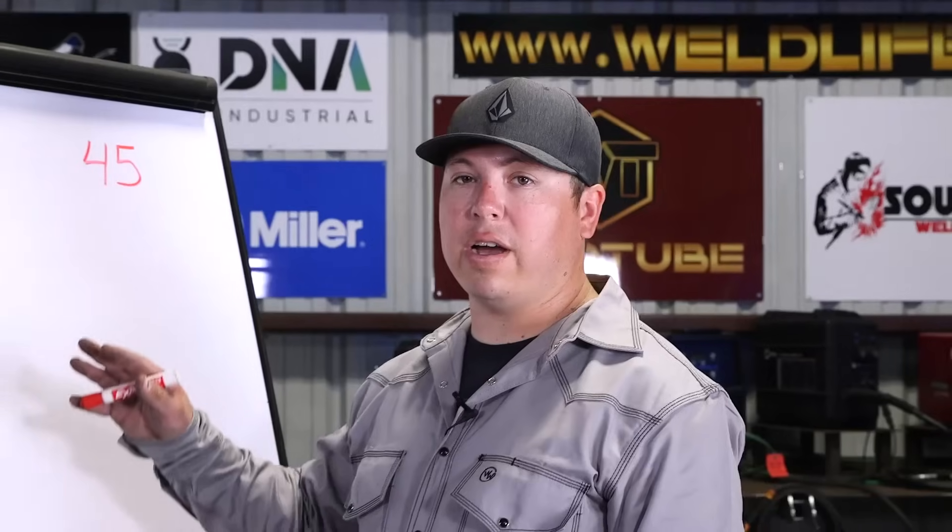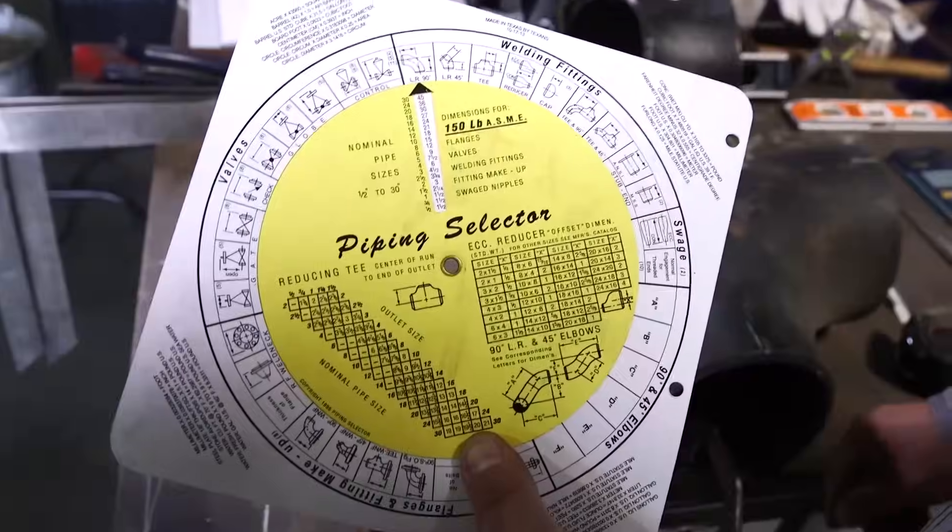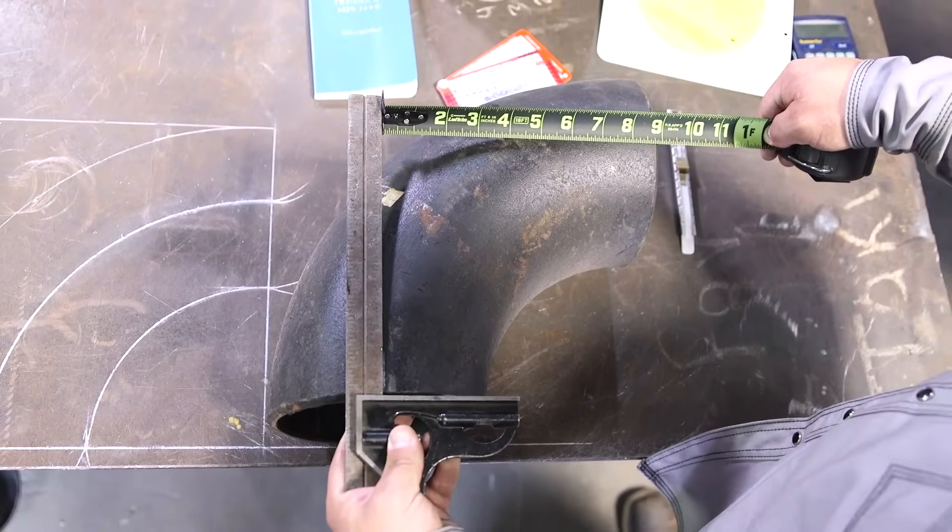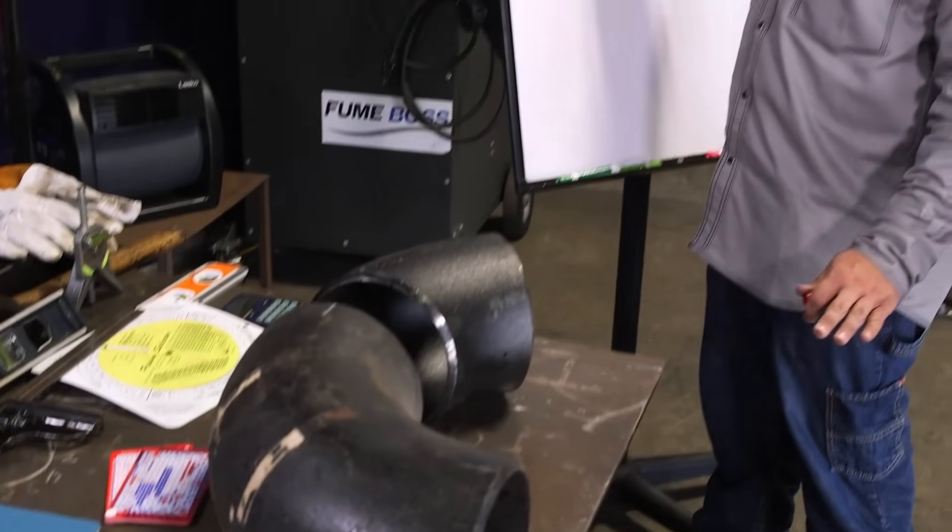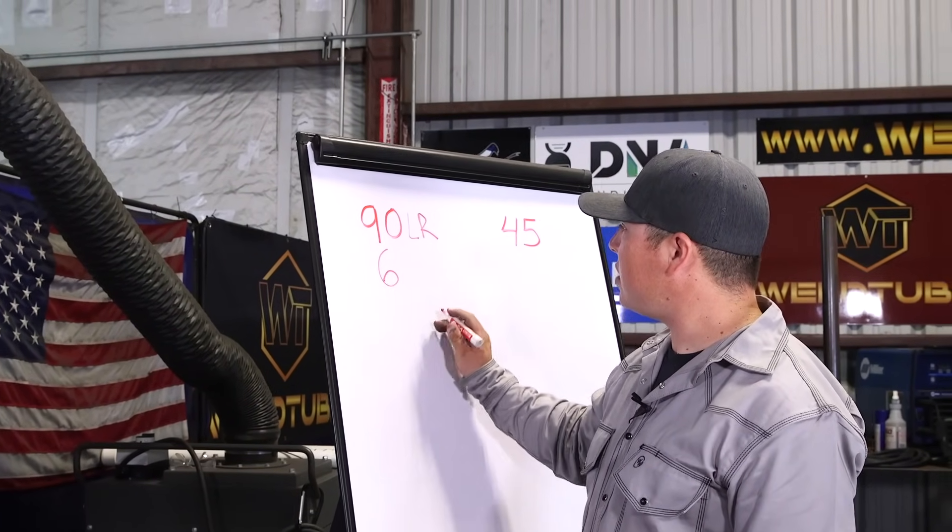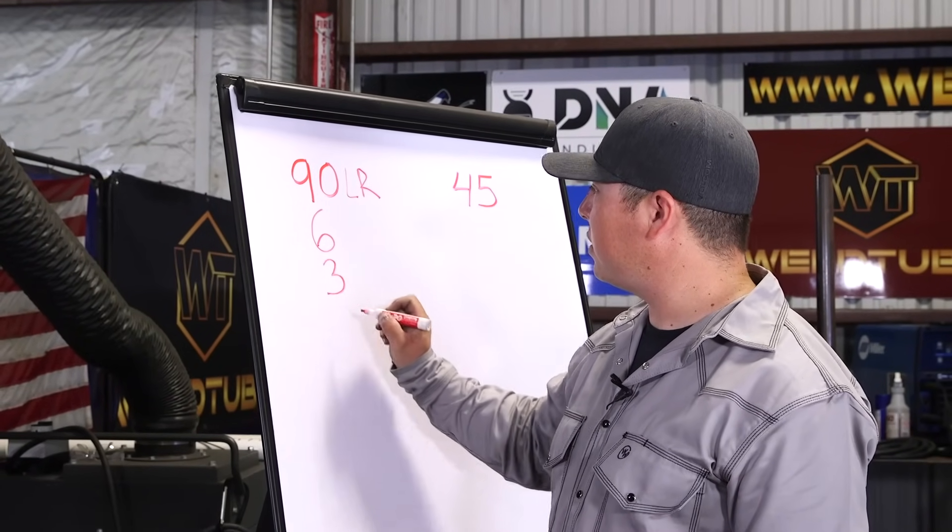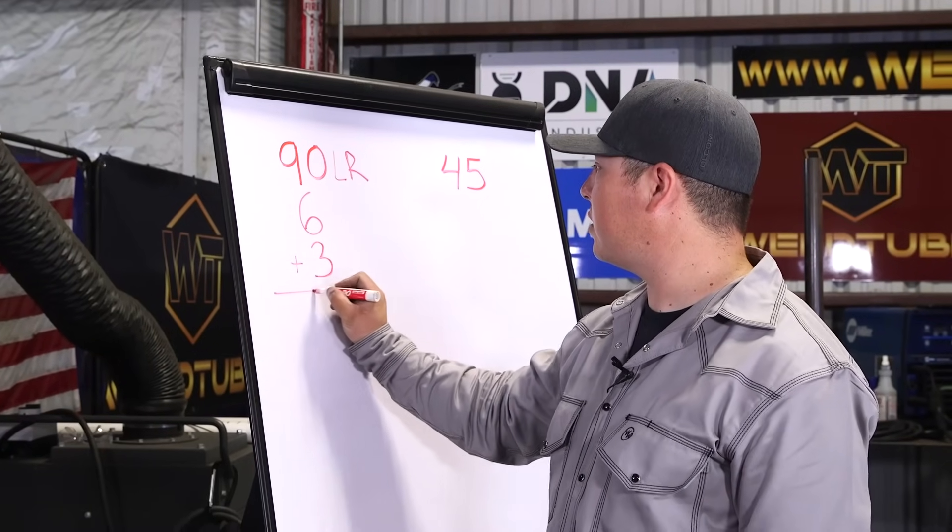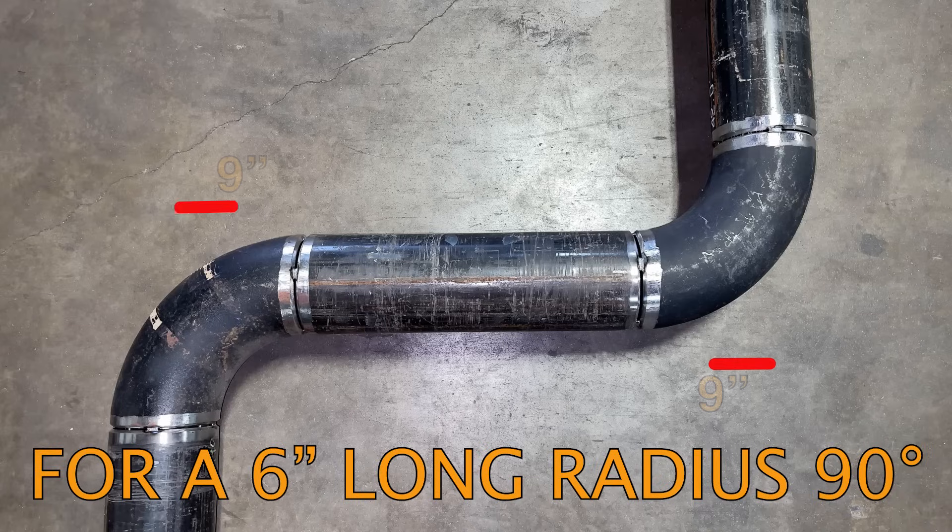All right guys, so I'm going to show you how to find these takeoffs without having to use the books or chico cards or if you don't have access to any of that. So we'll start off here with the long radius 90. So we have a 6 inch 90 in this particular case. So we're going to go with our nominal pipe size. That's going to be 6. And then we're actually going to break that down in half, 3. And then we are going to add these two numbers together. That will give us a 9 inch takeoff for our long radius 90.